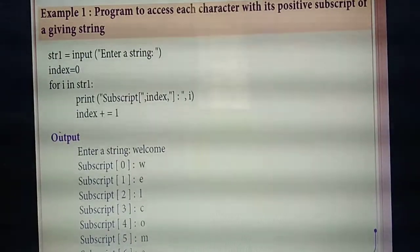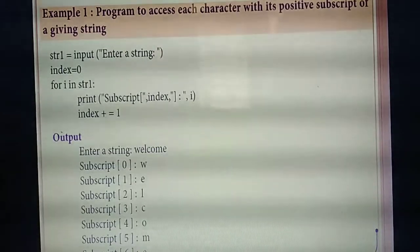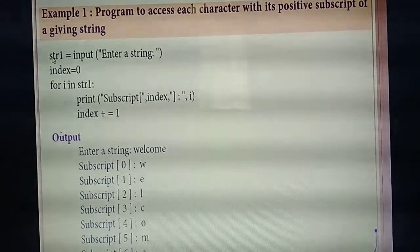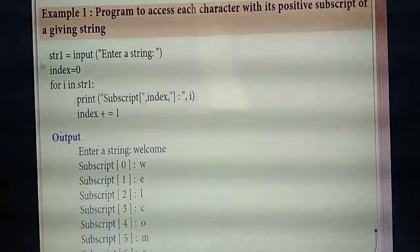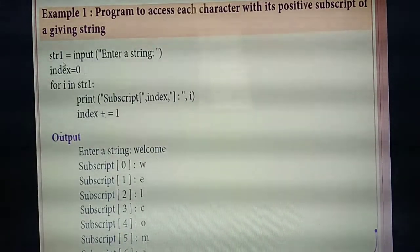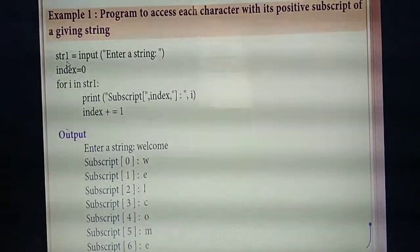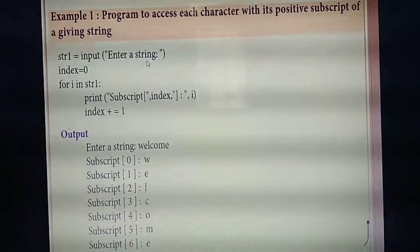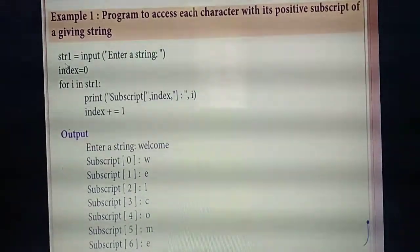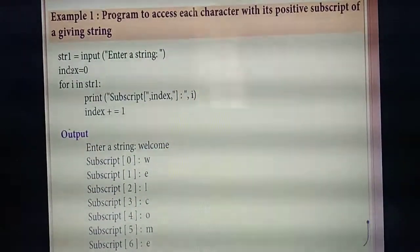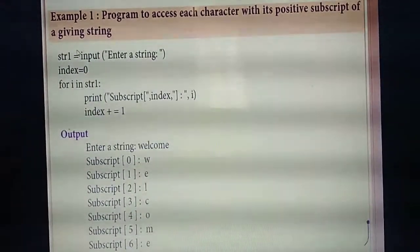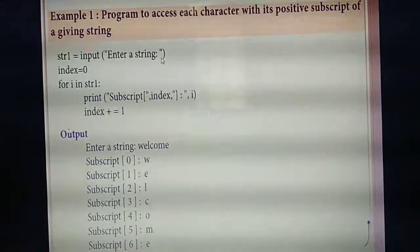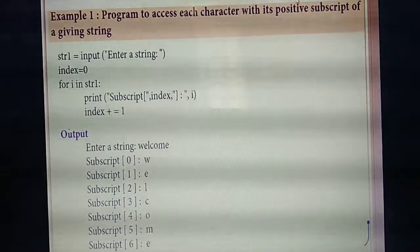Next program: accessing the negative subscript. The difference from positive subscript is that negative subscript starts from minus one from the last character. You define variable str1 and enter a string. For negative subscript, instead of setting index to zero, you set index equal to minus one. You use a while loop, and calculate the length of the string using len(str1), then use minus length to start from the last.